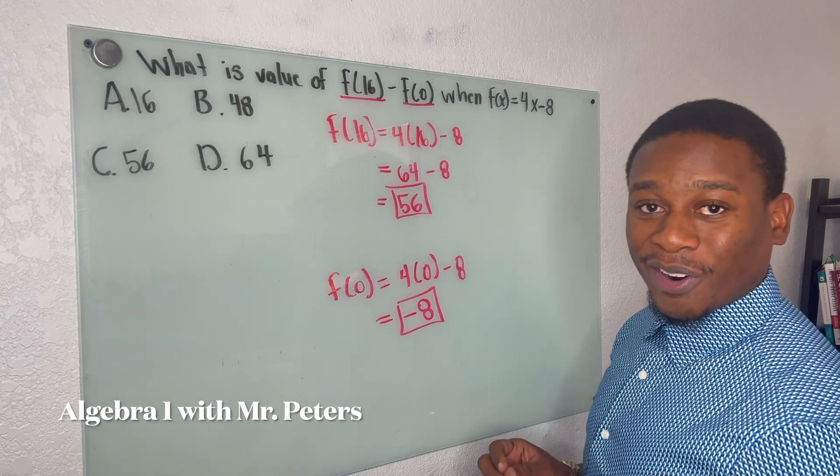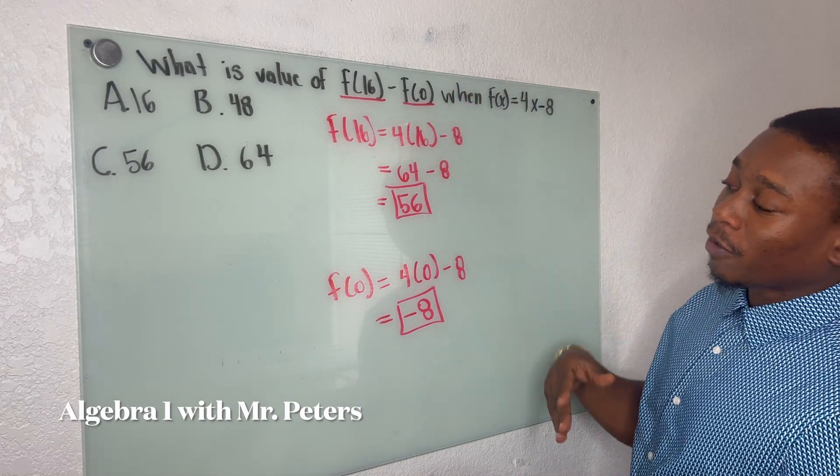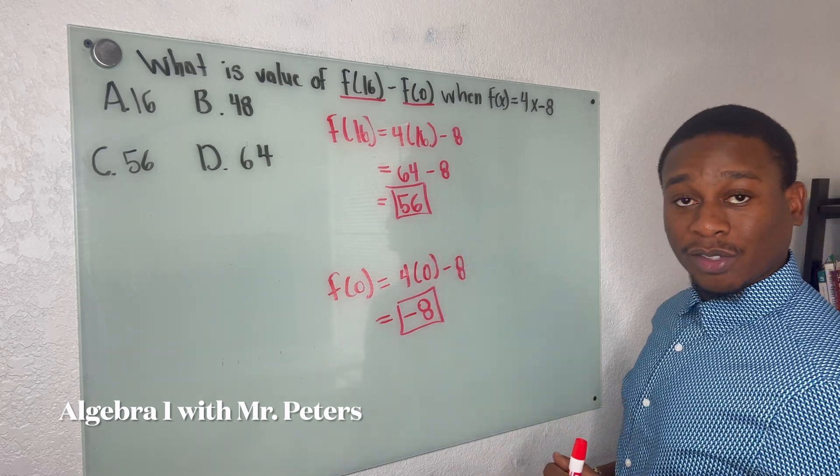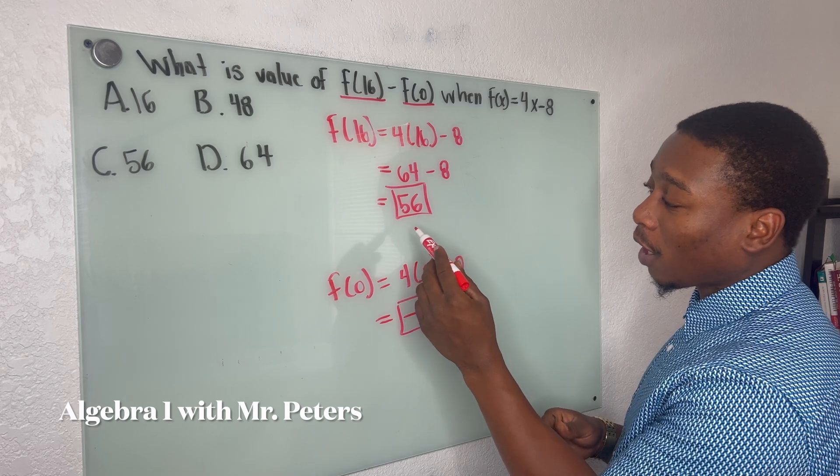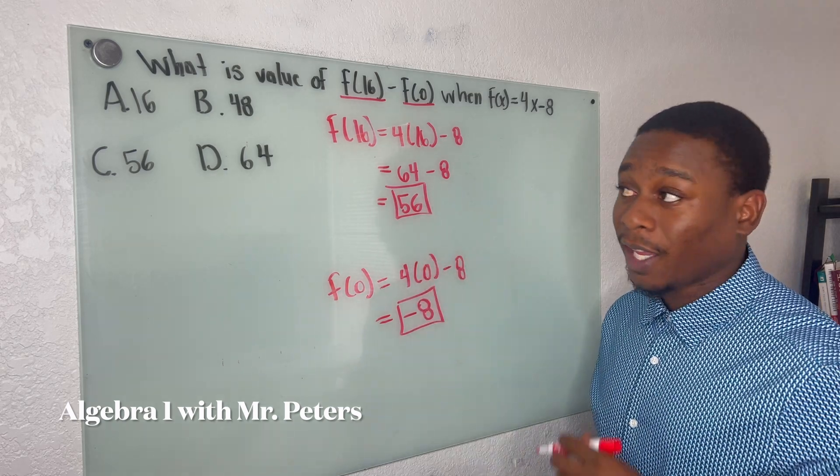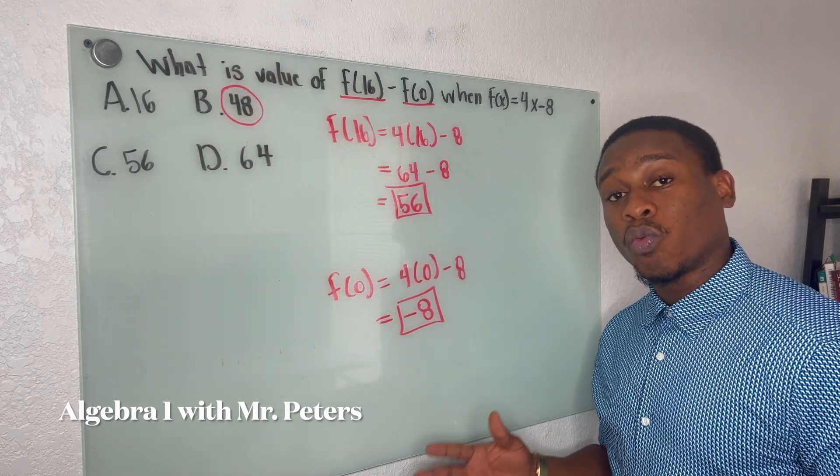So this is a very tricky part now. They tell us to do f(16) minus f(0), which is just the answers. But typically what a lot of students will do is they're going to just say 56 minus 8 and they're going to go ahead and pick 48. But that is wrong.